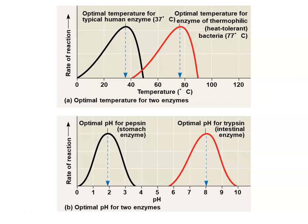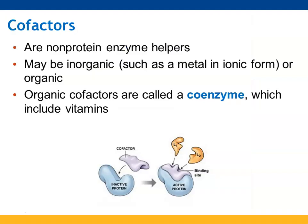Here you see a couple of examples of enzymes, and it really just depends on where that enzyme is working as to what the optimal temperature and pH would be — what is its environment, where does it need to work, and what conditions are most favorable for it to work in that environment?